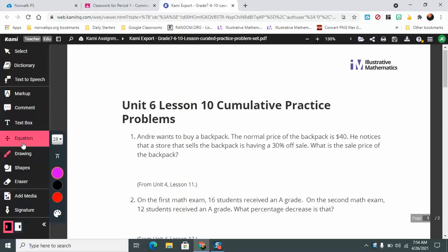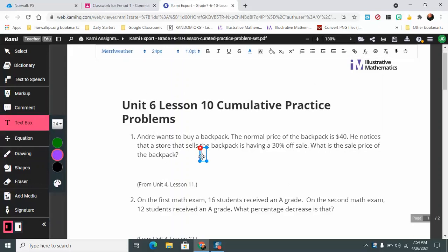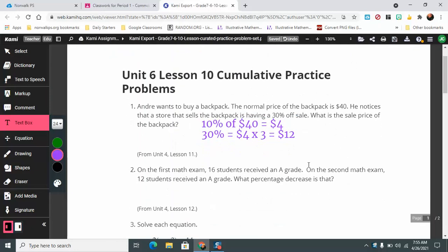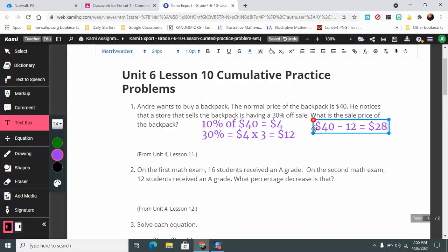Normal price of the backpack is $40. He notices the store sells the backpack having a 30% off sale. If we're taking 30% of a number, we're basically going to take 10% three times. 10% of $40 equals $4, because all you have to do is move the decimal point over one place to the left. That means 30% would equal $4 times 3, which equals $12. That's how much money is taken off. The final sale price is $40 minus $12, which equals $28.